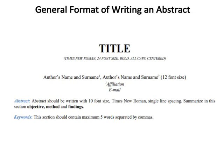General format for writing an abstract: the title should be in Times New Roman, 24 font size, bold, all caps, and centered. Author names and surnames are in 12 font size, with affiliation and email of all cited authors listed below. The abstract itself should be written in Times New Roman, 10 font size, with single line spacing, and should summarize the objective, methods, and findings. The keywords section should contain a maximum of five words separated by commas.